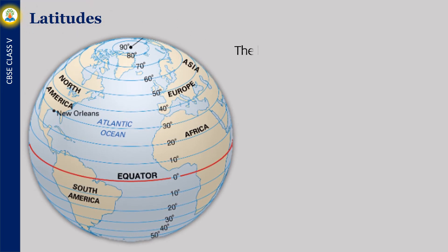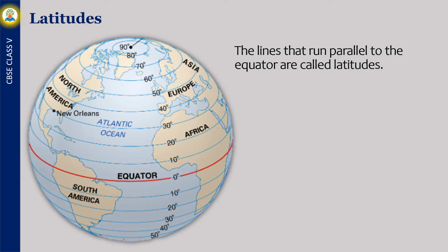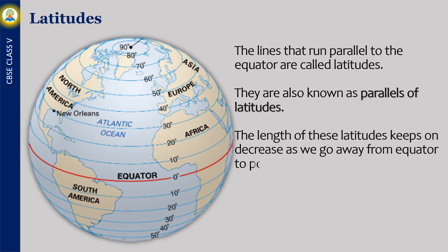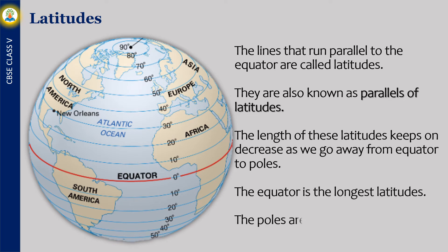The lines that run parallel to the equator are called latitudes. They are also known as parallels of latitudes. The length of these latitudes keeps decreasing in degrees as we go away from the equator towards the poles. The equator is the longest latitude. The poles are the shortest latitudes.